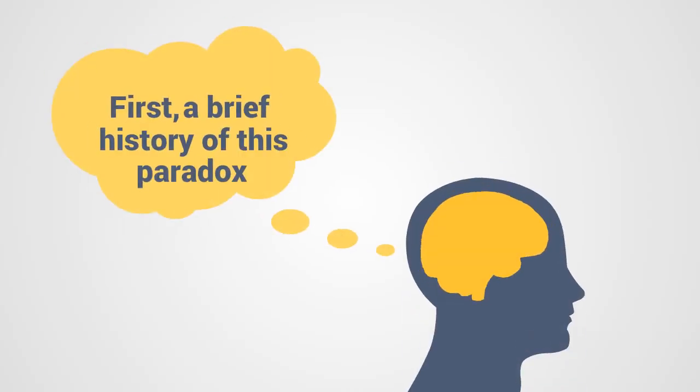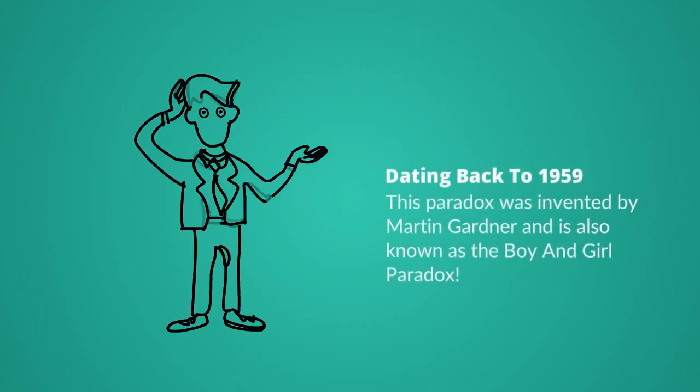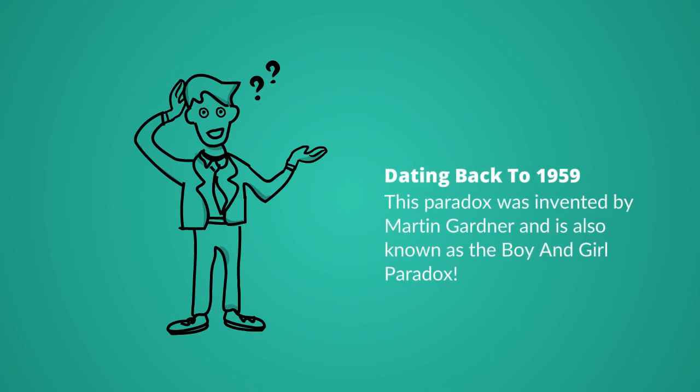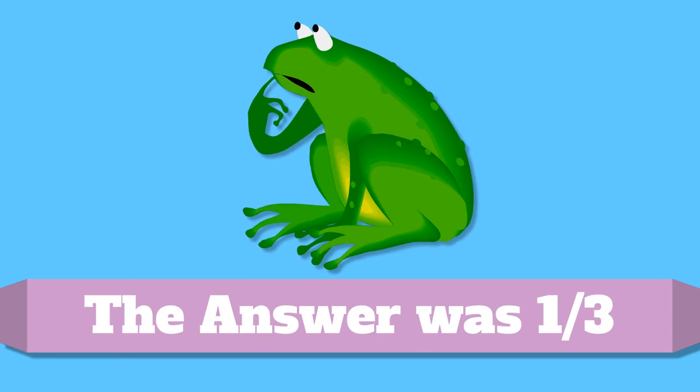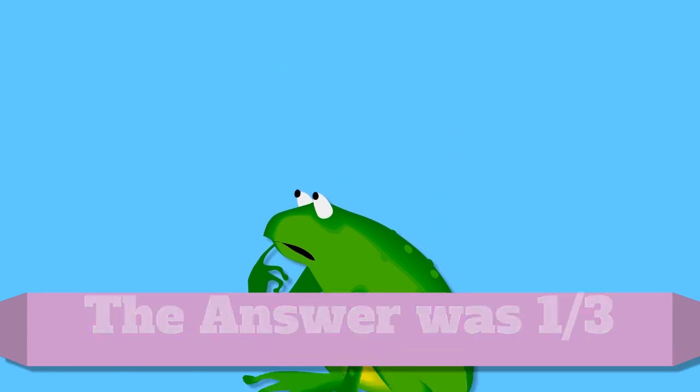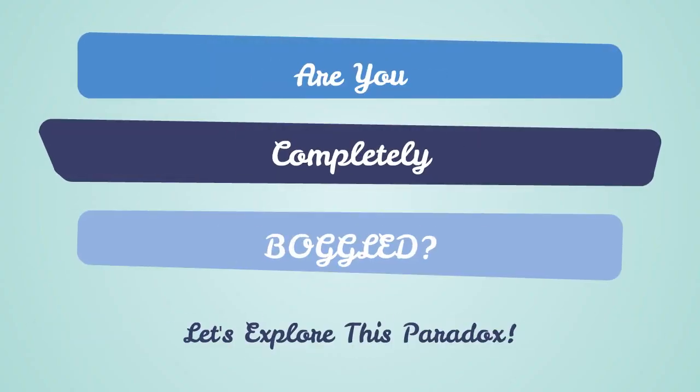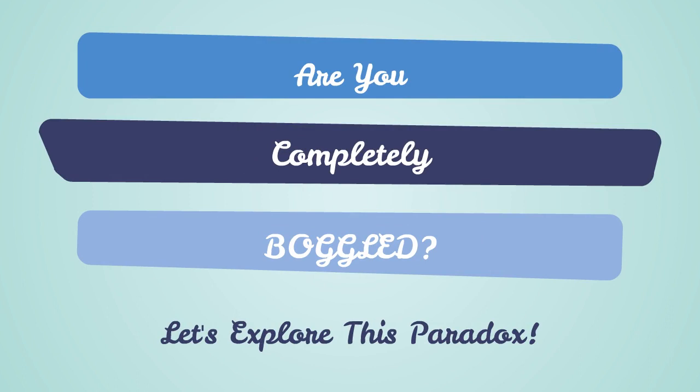First, a brief history of this paradox. Dating back to 1959, this paradox was invented by Martin Gardner and is also known as the boy and girl paradox. The correct answer is surprisingly not one-half. The correct answer was in fact one-third. Are you completely boggled? Let's explore this paradox.